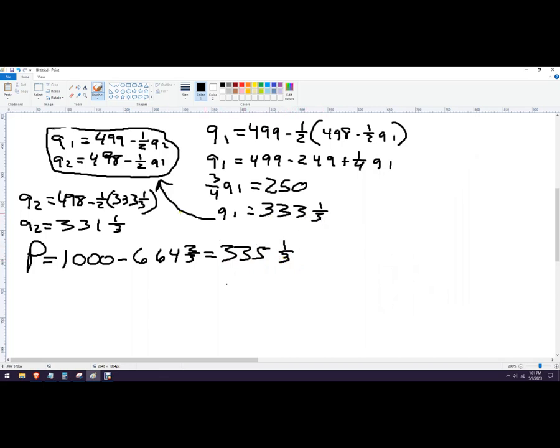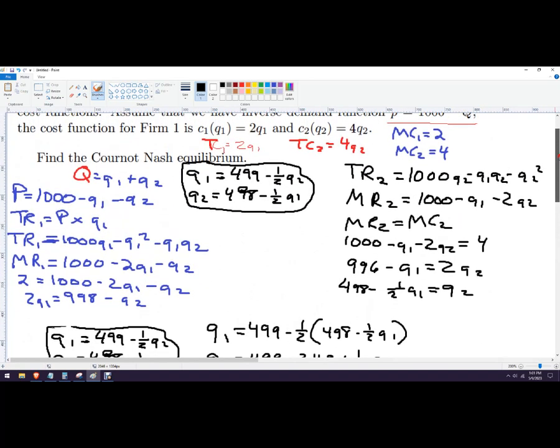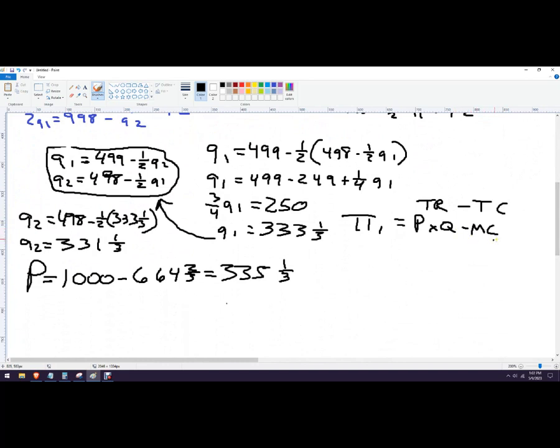And then if you wanted to, assuming there was no fixed costs, what you could do for the profit for firm one would be its total revenue minus its total cost. So you get that from price, which is 335 and a third times its quantity minus marginal cost, which in this case, for firm one was two. So it's two, and then multiply that by its quantity, which was 333.